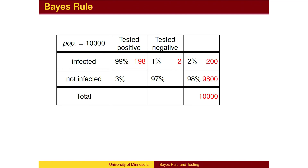Of the 9,800 healthy individuals, 3% of them — which is 294 individuals — have the test incorrectly showing that they are diseased. The remaining 9,506 correctly test as healthy.